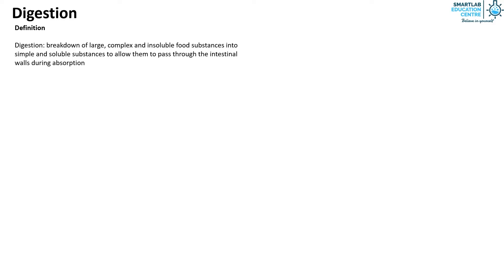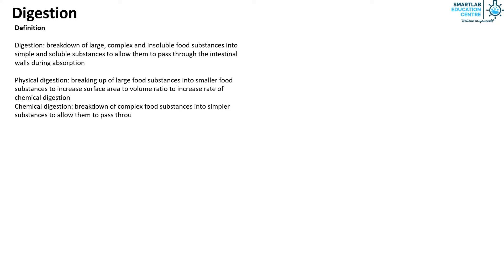During absorption, there are two types of digestion: physical digestion and chemical digestion. Physical digestion is the breaking up of large food substances into smaller food substances to increase surface area to volume ratio, increasing the rate of chemical digestion. Chemical digestion is the breakdown of complex food substances into simpler substances to allow them to pass through the intestinal walls during absorption.